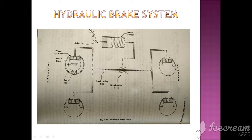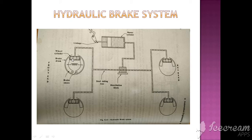This is the brake pedal in a car. When you press the pedal, this is the master cylinder. The fluid from the master cylinder gets compressed and it comes to the steel tubing and is distributed to all four wheels. These are the four wheel cylinders, and here in the wheel cylinder this will expand. When this expands, the brake drum is rotating and the brake pads rub against the brake drum, and hence the brakes are applied.